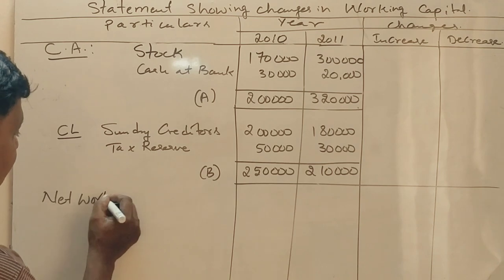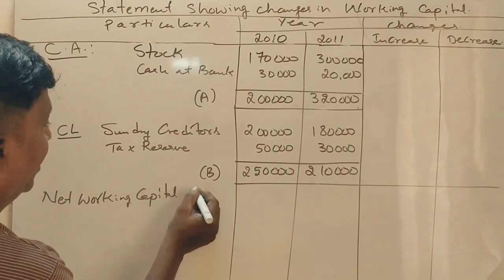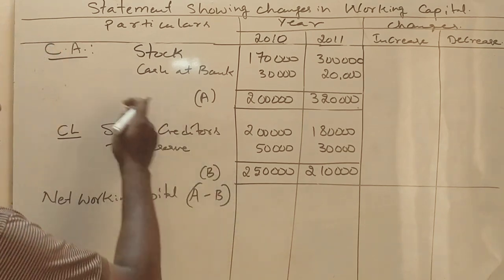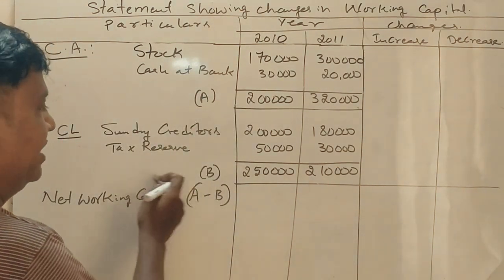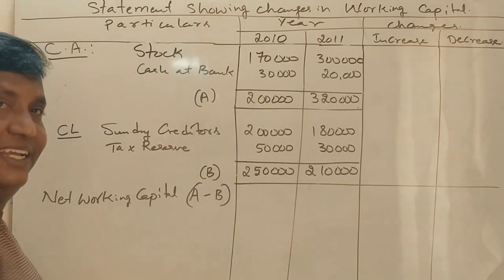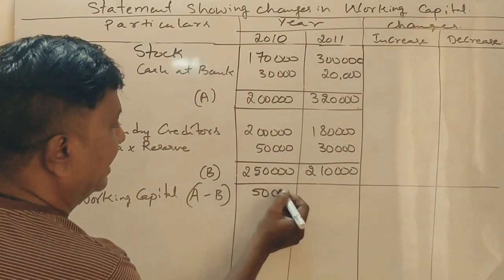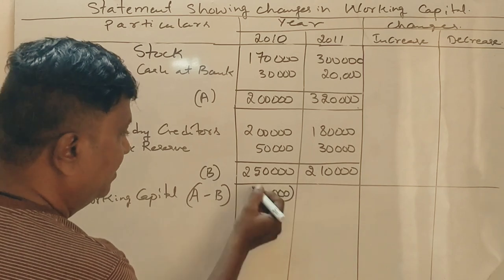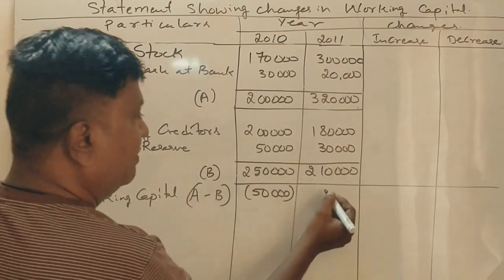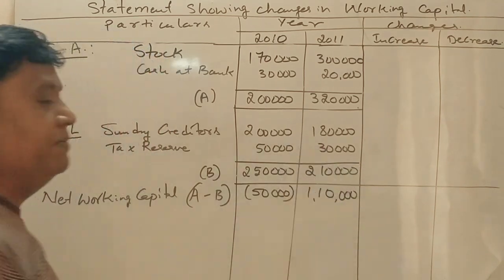Net Working Capital equals Current Assets minus Current Liabilities. Total current assets minus total current liabilities gives us the net working capital. We have a negative value for current liabilities scenario. Current assets minus current liabilities gives us 1,10,000.